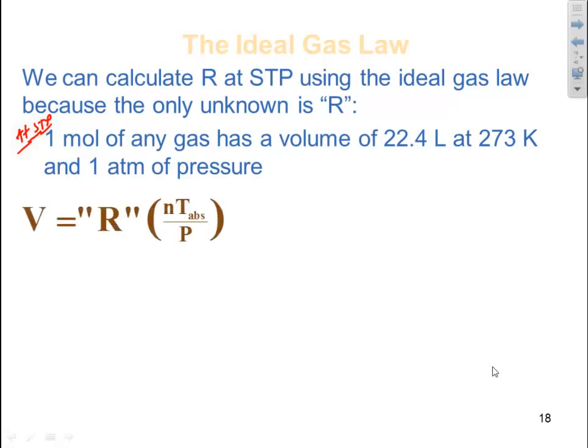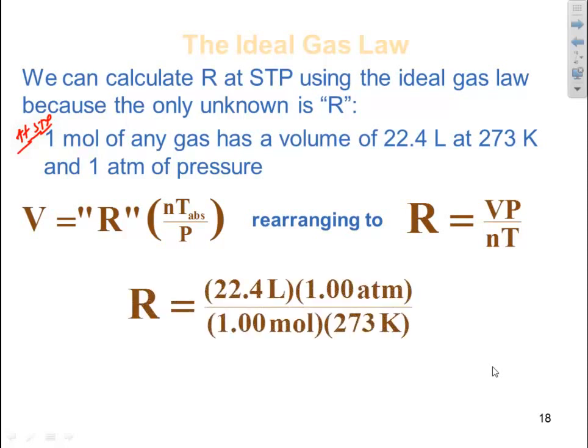So V is equal to R N T over P. Rearranging and solving for R, we get R is equal to V P over N T. V at STP would be 22.4 liters. Pressure is one atmosphere since we're at STP. We're talking about one mole of a gas, and we know the temperature at STP is 273 Kelvin.